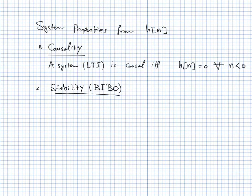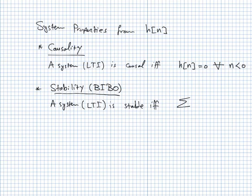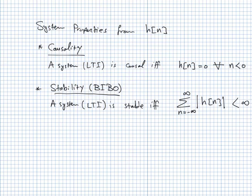For BIBO stability, a linear time-invariant system is stable if and only if the summation over N from minus infinity to infinity of the absolute value of H(N) is smaller than infinity — that is, some finite value. Instead of using integration as in continuous time, here we use summation. If the total summation of the absolute value of the impulse response is finite, the system is stable; if not finite, it is not stable.